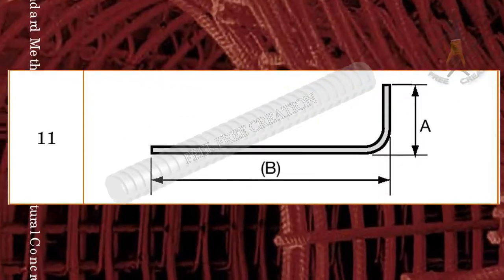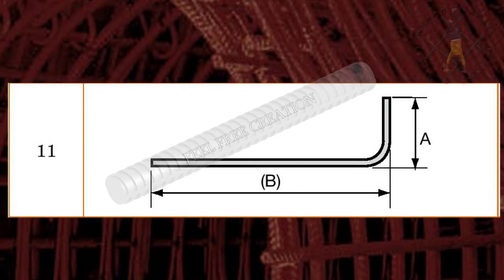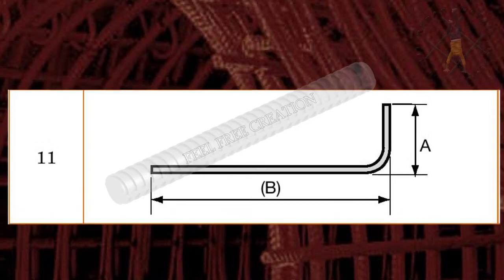Shape code 11. This bar has single 90 degree bent with normal bending radius, hence its shape name starts with 1.